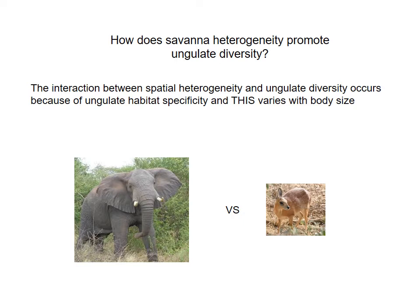If we unpack this a little bit more, we need to understand that the interaction between the patchiness of the environment and ungulate diversity occurs because ungulate habitat specificity is present and this changes with body size. So the specificity, or how specialized an elephant is, for example, is going to be quite different to something like a grysbok, which you find on the right-hand side.